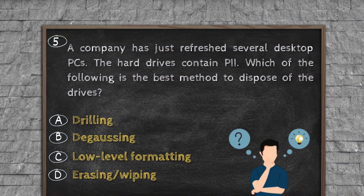Question number five. A company has just refreshed several desktop PCs. The hard drives contain PII. Which of the following is the best method to dispose of the drives? Option A, drilling. Option B, degaussing. Option C, low-level formatting. Option D, erasing/wiping.